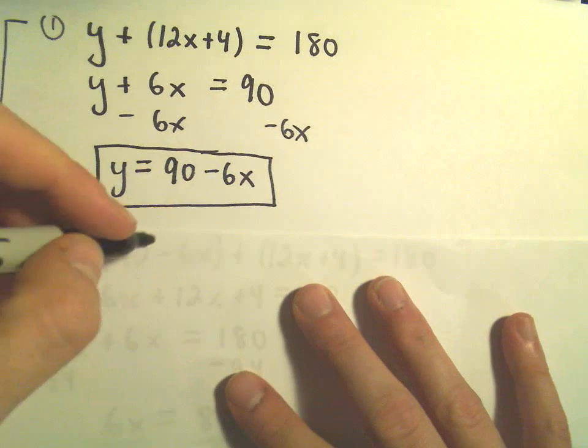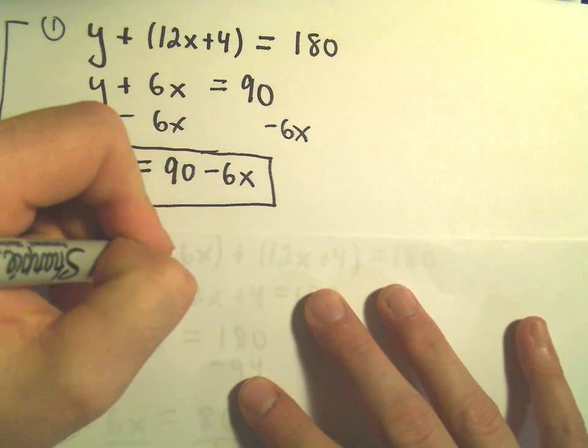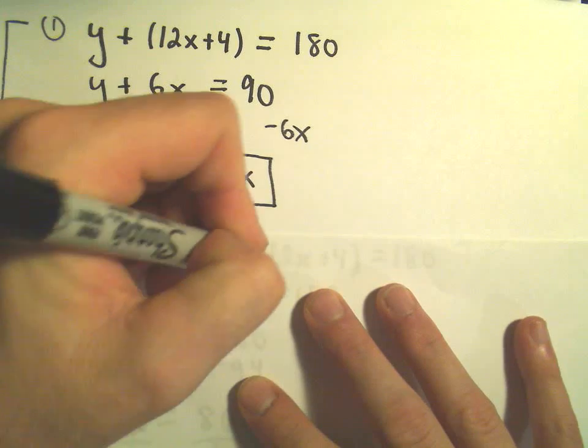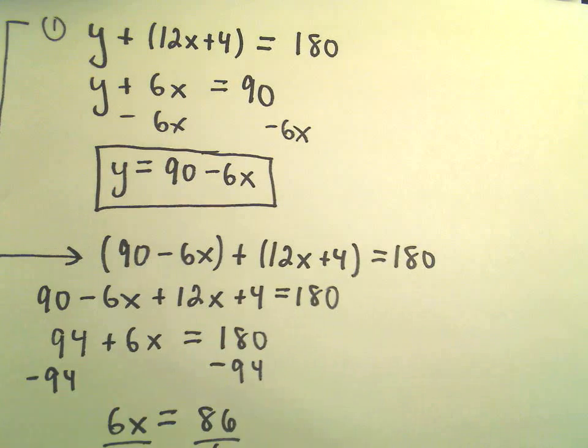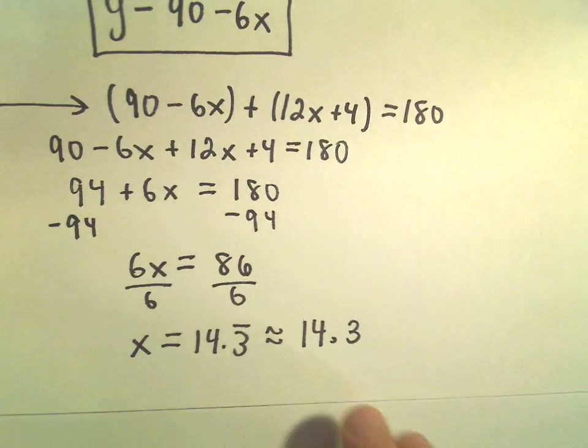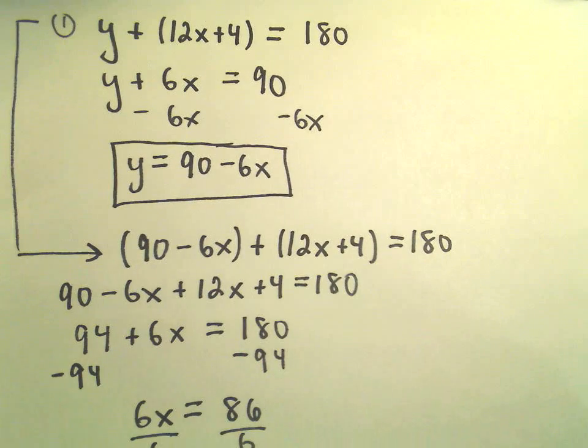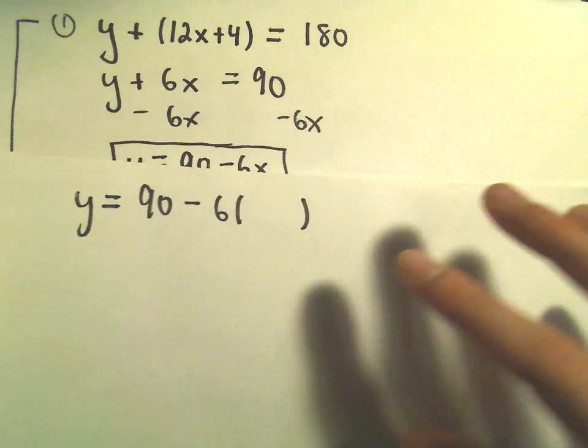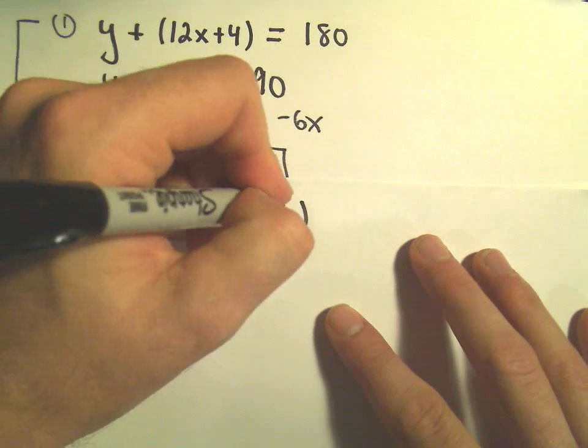Alright, so we know that y is 90 minus 6 times x, but we're rounding off x to be roughly equal to, we said 14.3, so let me just plug that in real quick, so 14.3.